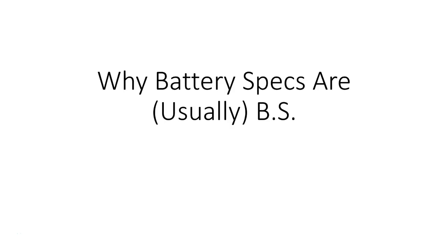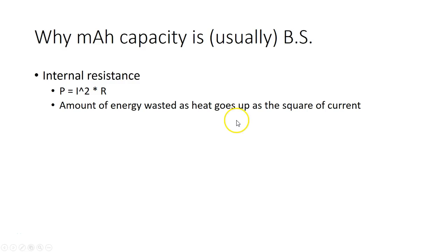So now let's do my discussion on why battery specs are usually BS. In the previous video, we talked about the internal resistance of the battery wasting energy as heat when you draw current from the battery. We can calculate the amount of energy wasted as heat using the formula power equals current squared times resistance, which means that the amount of energy wasted goes up as the square of the current.